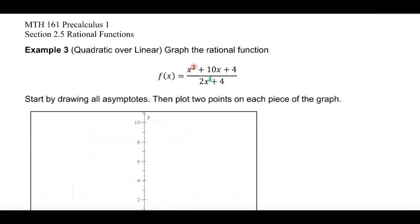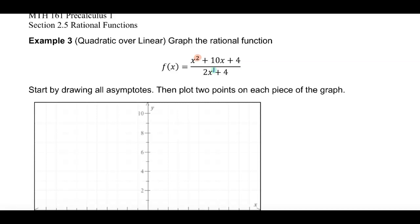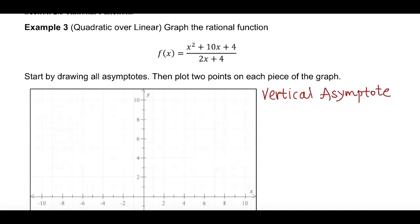This is the third example of graphing rational functions. We have a quadratic over linear, and we're going to have a special asymptote in this example. Let's start by finding the vertical asymptote. The vertical asymptote happens when the denominator is equal to zero, but if the numerator is also zero at that point, then it's called a hole. So we should try to factor the numerator first.